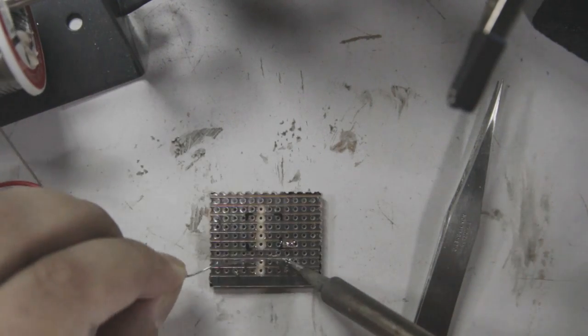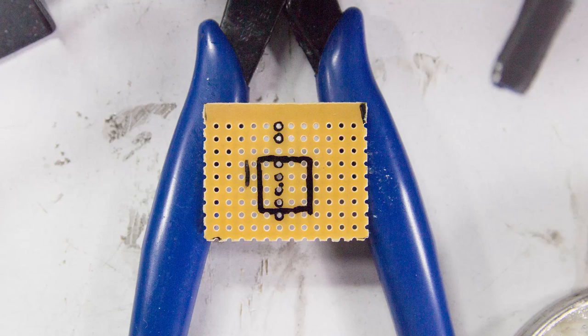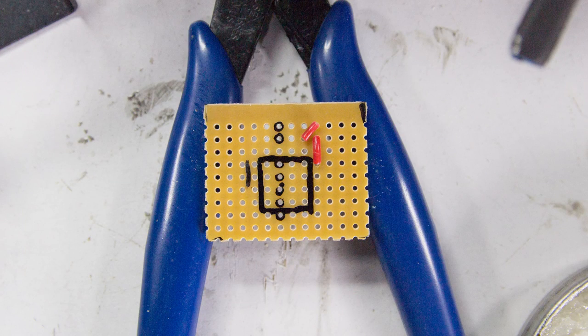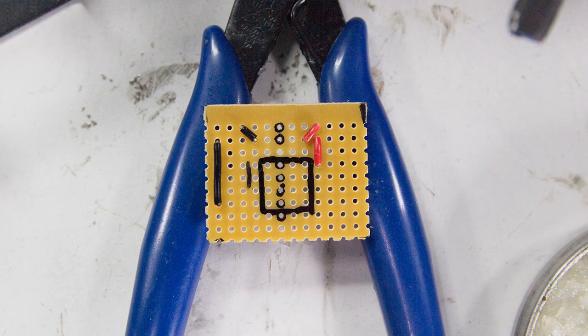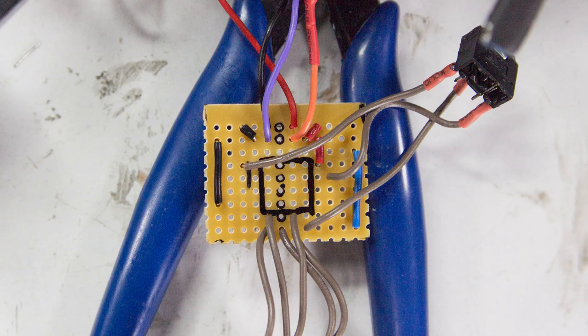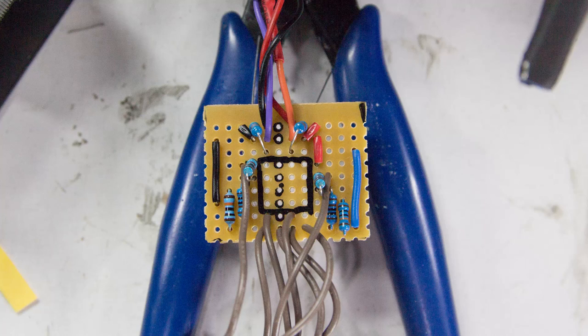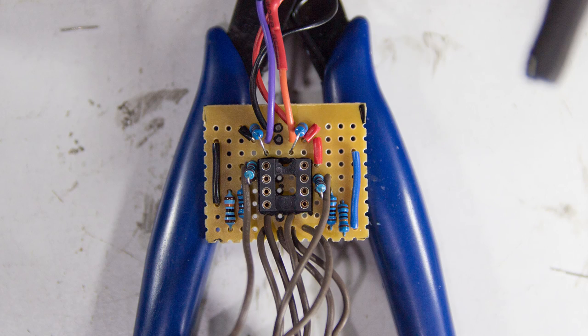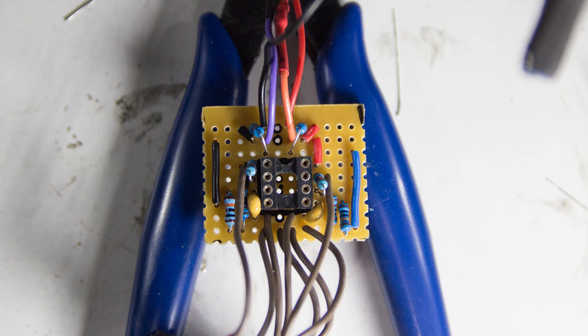Now, it's time to solder in the on-board components. First, we install all the on-board wires. Follow with all the wires from off-board components. Then, we install the resistors, the IC socket, and last but not least, the capacitors.